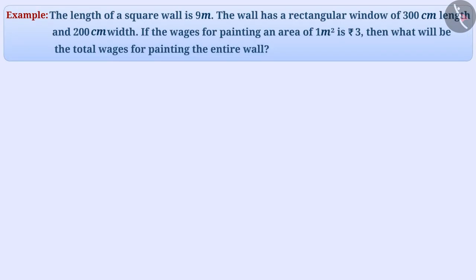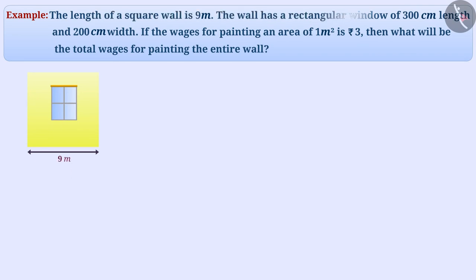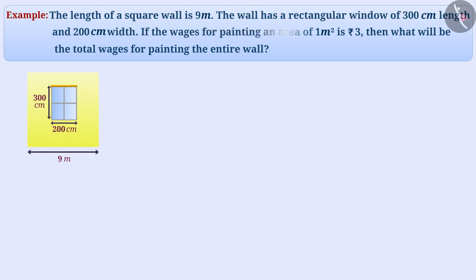Next example: the length of a square wall is 9 meters. The wall has a rectangular window of 300 cm length and 200 cm width. If the wages for painting an area of 1 square meter is Rs. 3, then what will be the total wages for painting the entire wall?